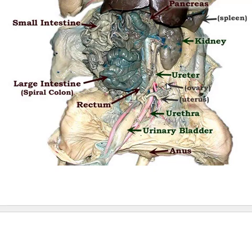This is a female pig. You can see her small ovary — looks like a little bean. Her uterus is very small because this is a fetal pig that was taken from its mother before being fully formed, then injected with different colored dyes so we could see the various parts.